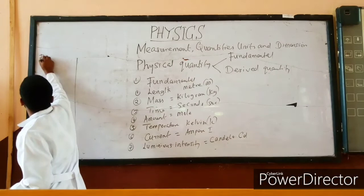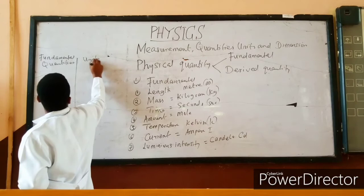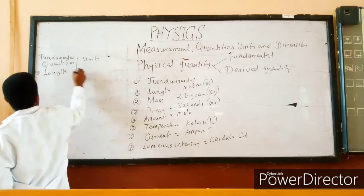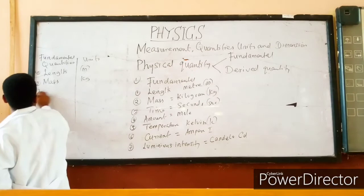Let me summarize the fundamental quantities and their units. The first one is length, with the unit meter, symbol m. The second one is mass, measured in kilograms, symbol kg. The third one is time, measured in seconds.